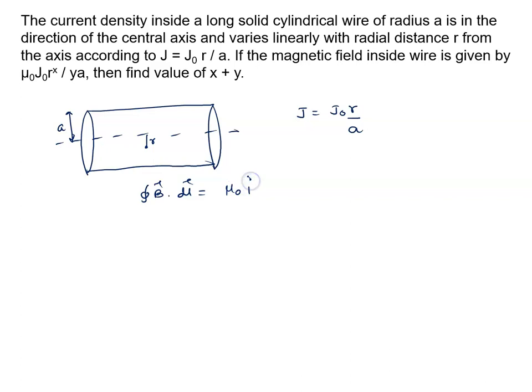Current density is basically given by J equal to i upon A, current per unit area. So if I'm at r distance, I take a small element. And dr is very small.